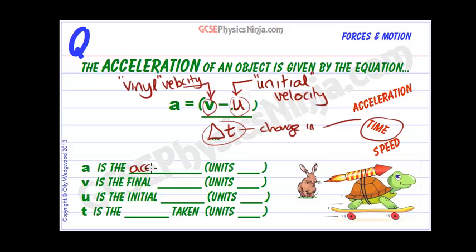So A is acceleration. The units of acceleration are, well velocity is meters per second and time is seconds, so meters per second divided by seconds will give us meters per second squared. It's kind of meters per second per second. Here we are.